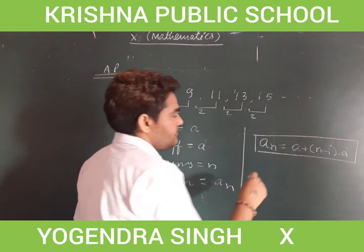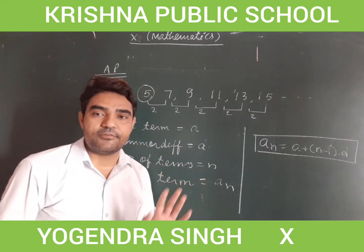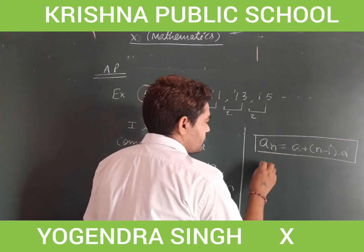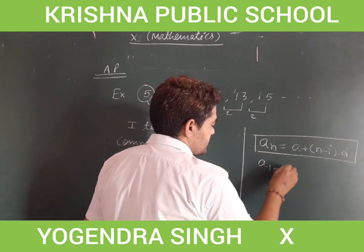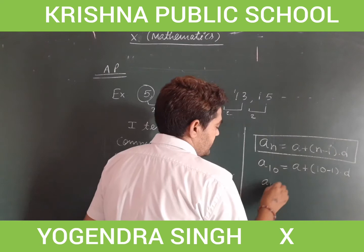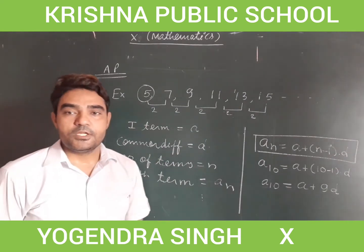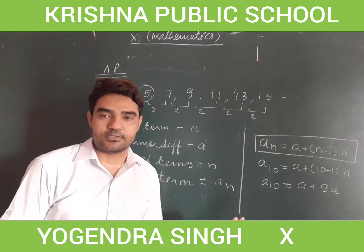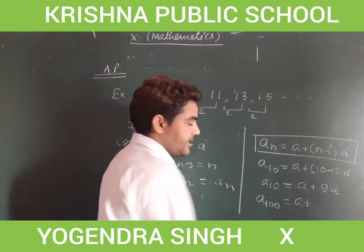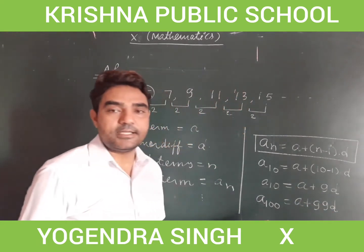Using this formula for the 10th term: a₁₀ = a + (10 − 1) × d = a + 9d. So we can write a₁₀ as a + 9d. Similarly, a₁₀₀ can be written as a + 99d, because we take one less than the term number multiplied by d.